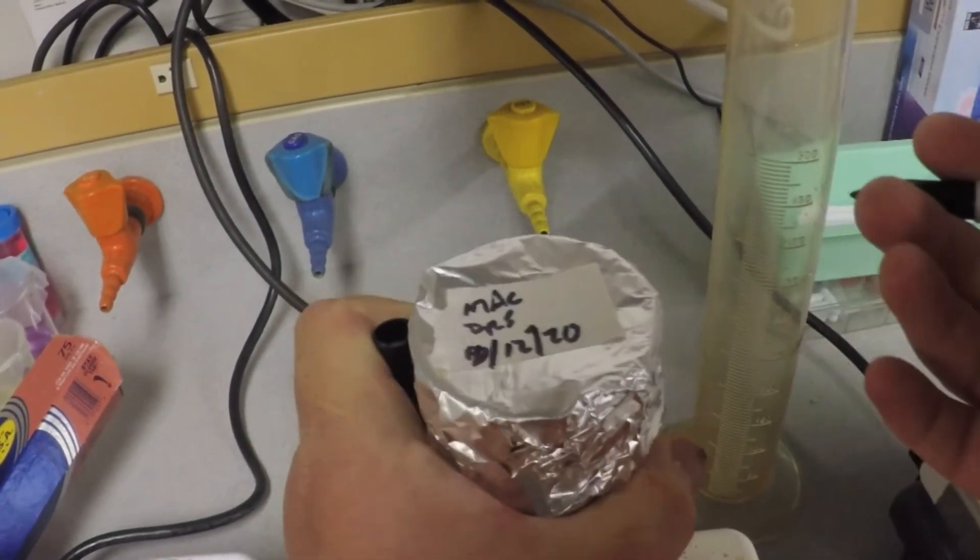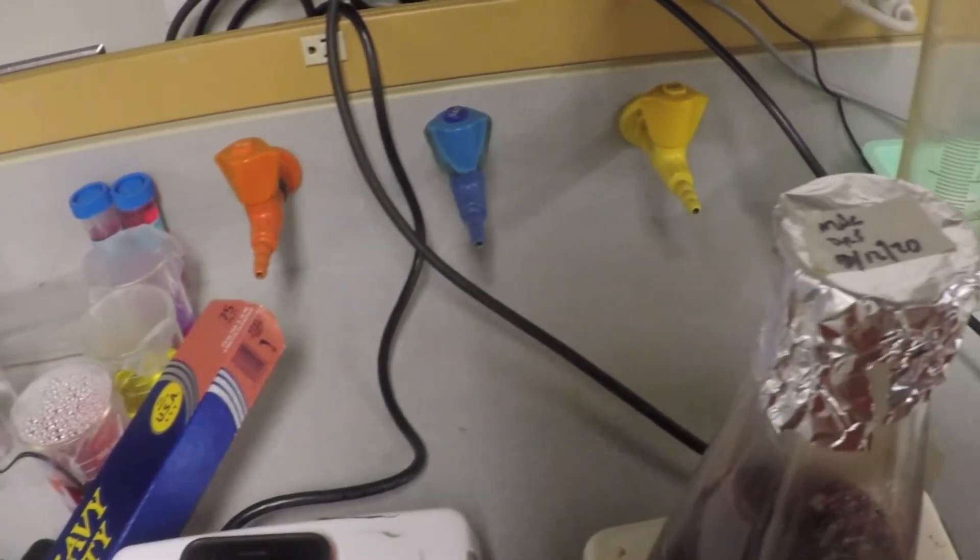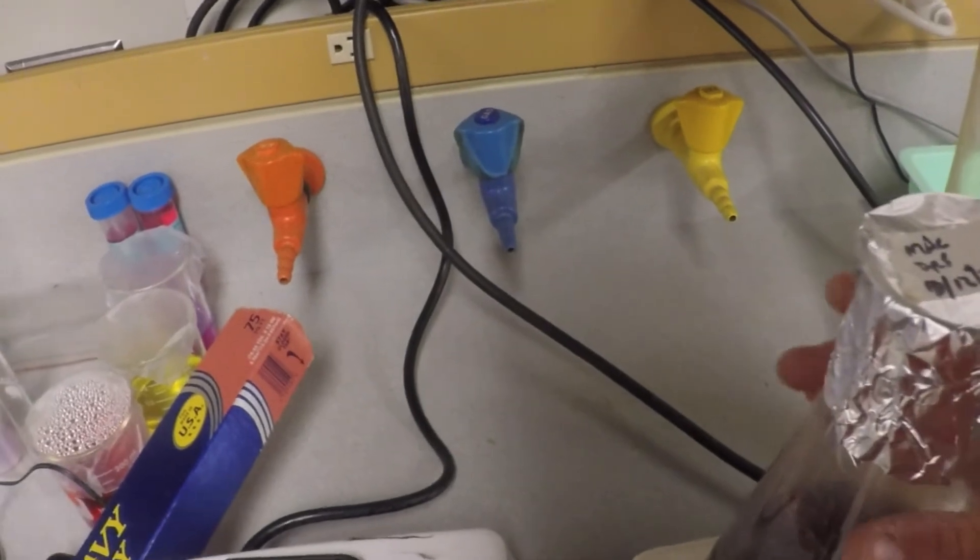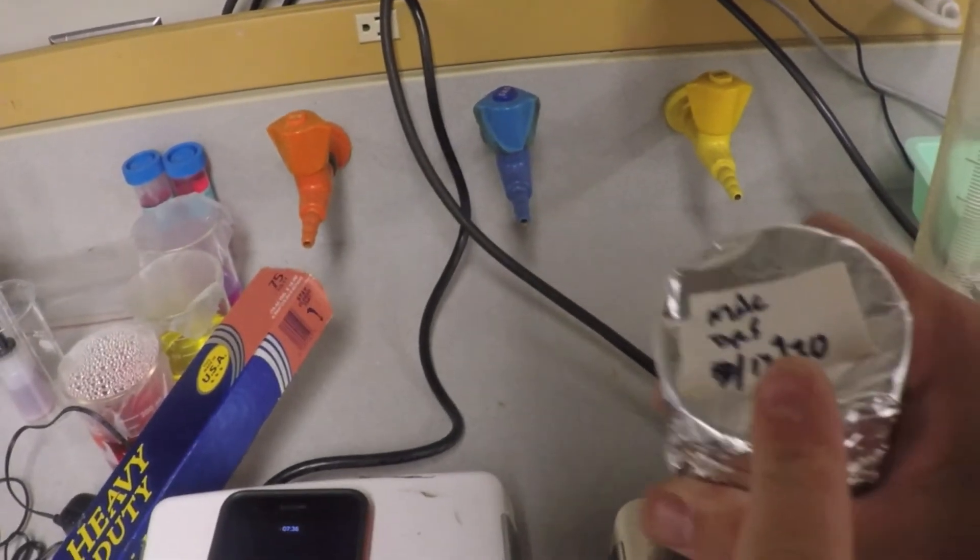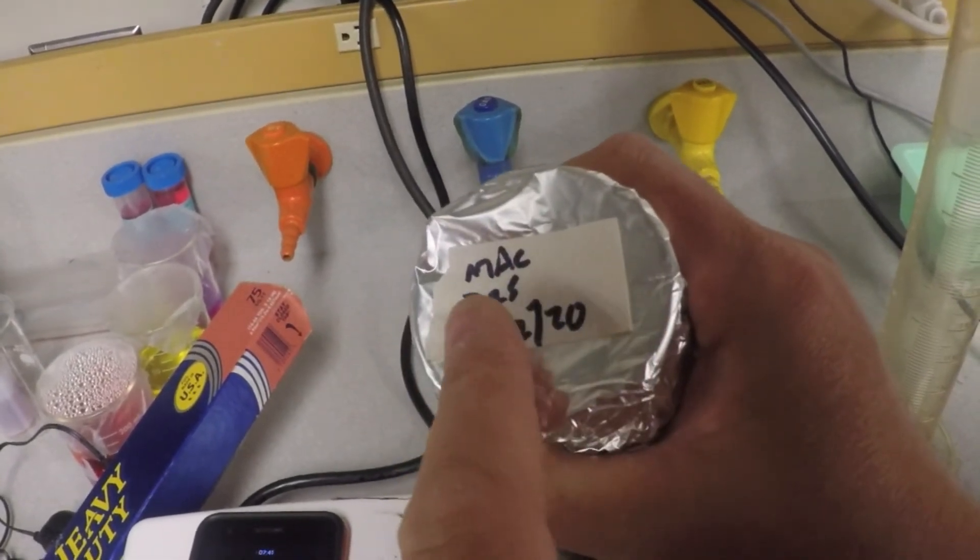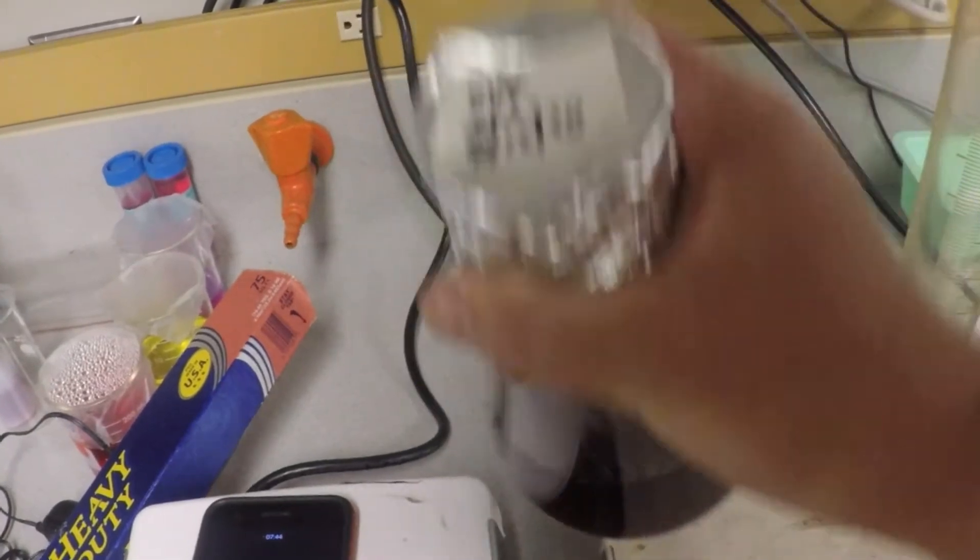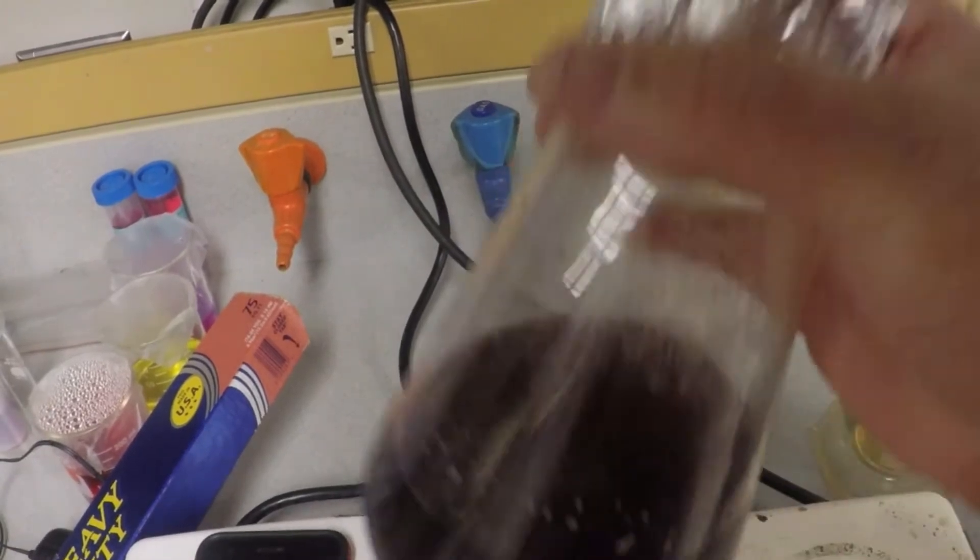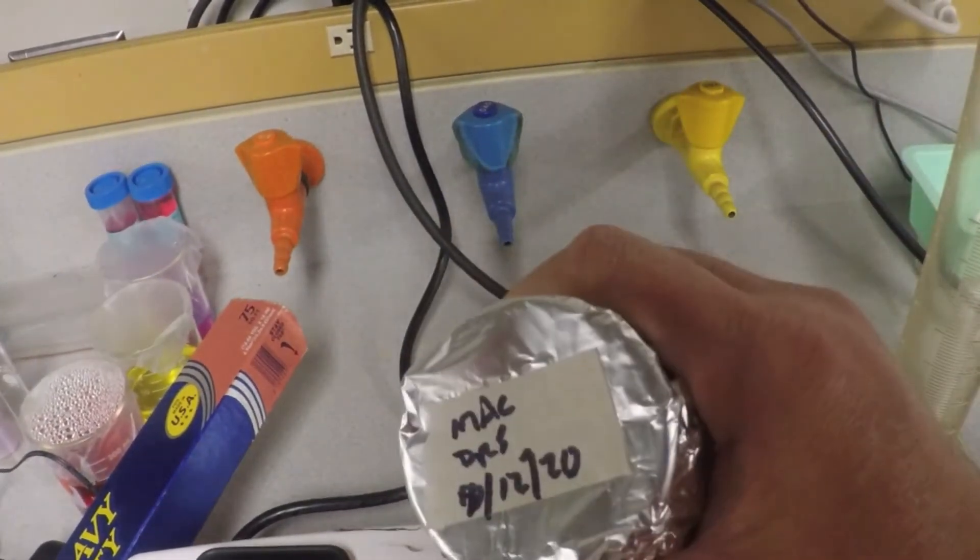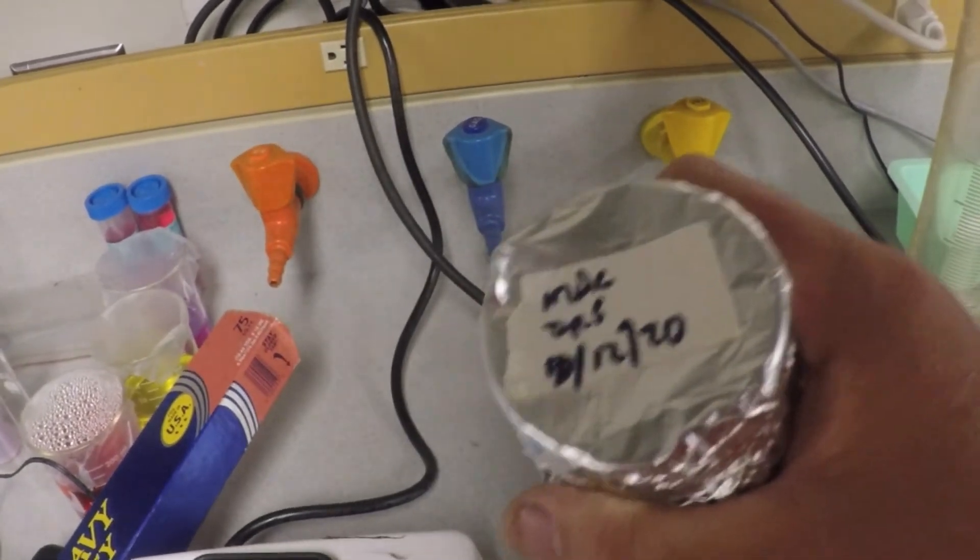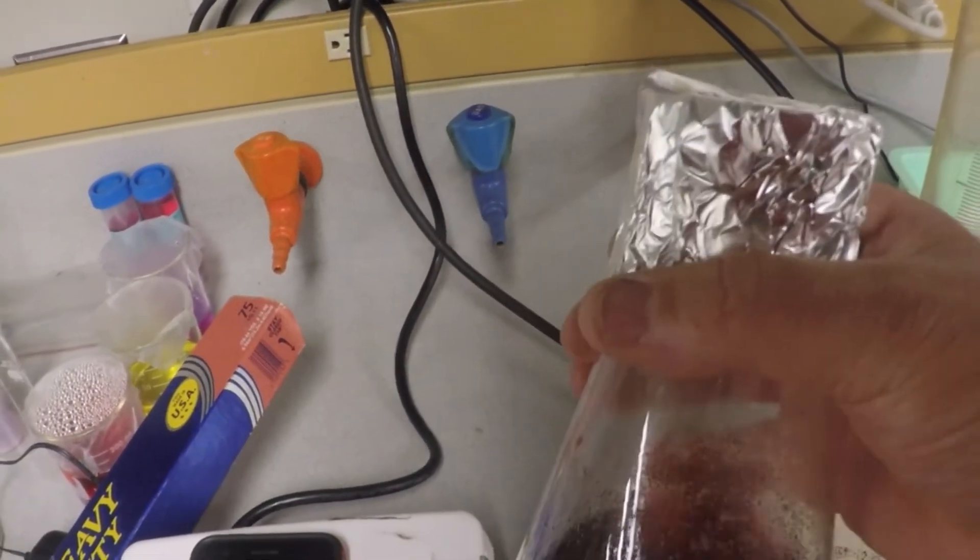We'll go and autoclave it. What's going to happen with this autoclave tape is under the pressure and temperature of the autoclave, this will change black and you'll see the words autoclave on there. That'll mean this thing actually autoclaved and is sterile. If you pull it out and there's no change, that means something's wrong with the autoclave and this stuff is likely not sterile. You do not want to use it—you tell me or Steve or Julie and we fix the autoclave.